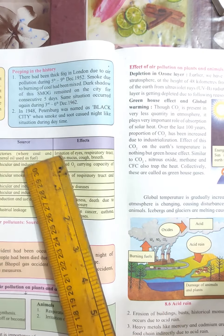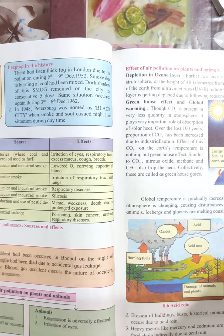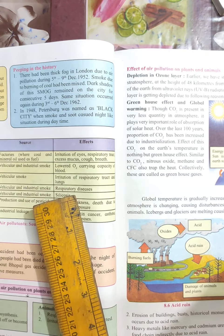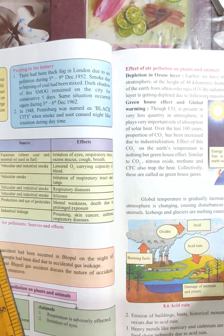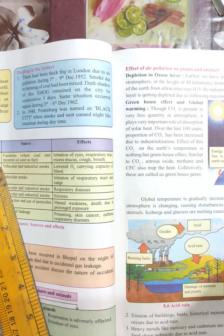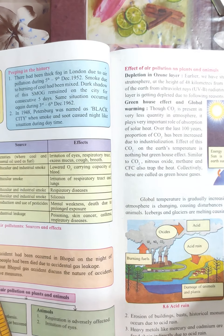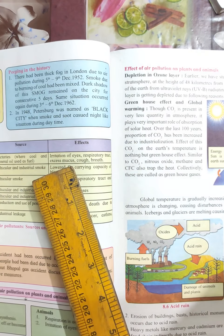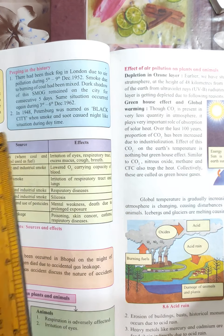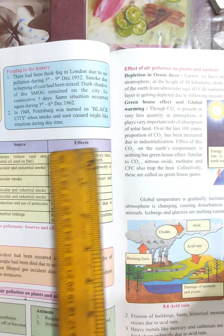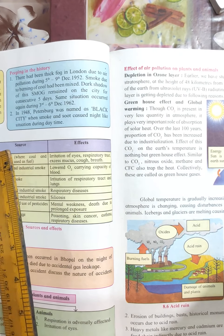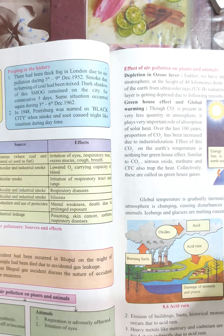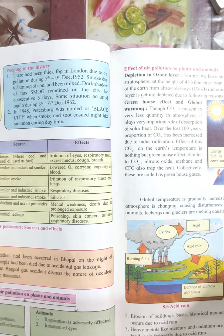Air pollutants — this chart is very important for MCQs and objectives. Sulfur dioxide (SO2) is a gas obtained from factories. Its effects include irritation of eyes, respiratory tract, excess mucus, cough, and breathing problems. The chart lists air pollutants, their sources, and effects with molecular formulas like SO2, CO, CH4 — these may come in one-mark questions.